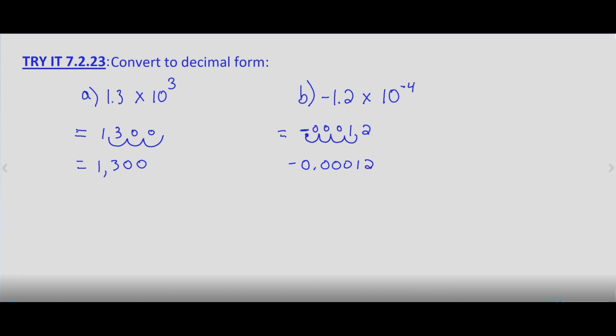So again, when we have a positive exponent on 10, we move the decimal place to the right. When we have a negative exponent, we move it to the left.